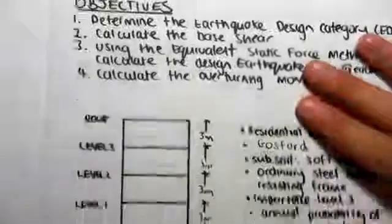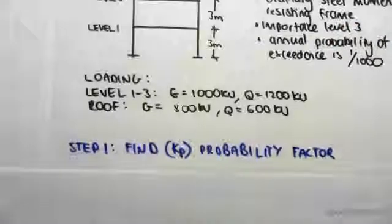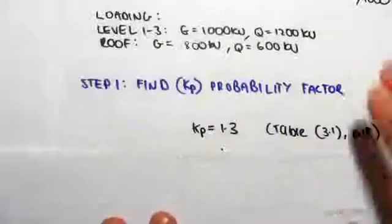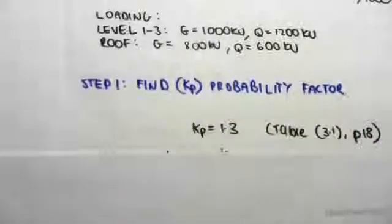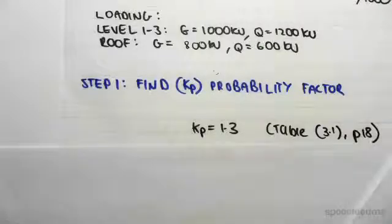So step one in this process is going to be finding kp, the probability factor. We're going to be using this annual probability is one in one thousand, so we're going to go to table 3.1 on page 18.